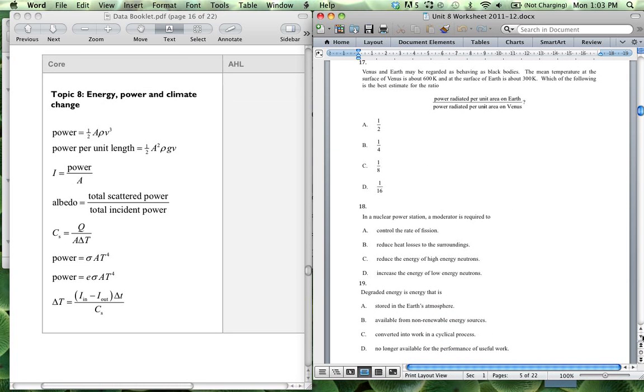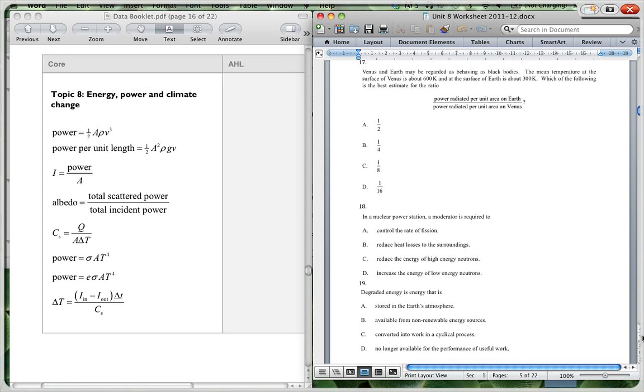Question 17. Venus and Earth may be regarded as behaving as black bodies. So there's our formula for black bodies. The mean temperature of the surface of Venus is 600 Kelvin. And the surface of the Earth is 300 Kelvin. Which of the following is the best estimate for the ratio of power radiated per unit area on the Earth to power radiated per unit area on Venus? So we're going to be using our formula that power is equal to sigma, which is our Stefan Boltzmann's constant, surface area times T to the 4. Now, we've got per unit area. So these are going to be the same.